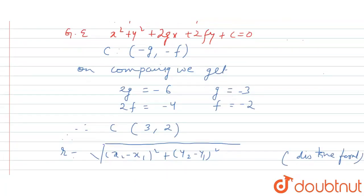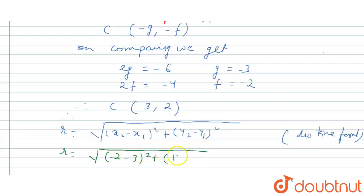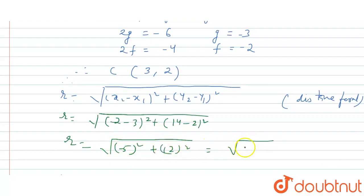We use the distance formula to find the radius: r = √((-2 - 3)² + (14 - 2)²) = √((-5)² + (12)²) = √(25 + 144) = √169. So the radius is 13 units.